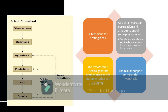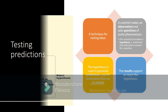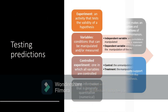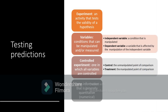This is a technique for testing ideas. A scientist makes an observation and asks questions about some phenomenon. The scientist then formulates a hypothesis — a tentative solution to a problem, a statement that attempts to answer the question. The hypothesis is used to generate predictions. And the results will either support or reject the hypothesis. To test the predictions, we need to conduct an experiment — an activity that tests the validity of the hypothesis.